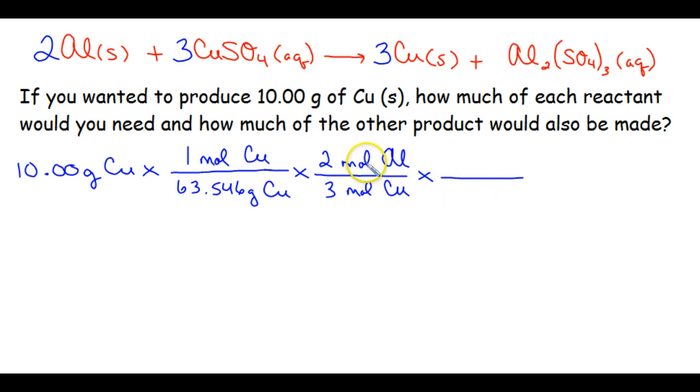And then, so we have moles of aluminum, but we can't directly measure moles in the lab. We have to measure things in grams. So we need to convert that to grams. So 1 mole of aluminum has a mass of 26.9815 grams. So if you plug that into your calculator correctly and round that to the 4 sig figs given, hopefully you got 2.831 grams of aluminum needed.